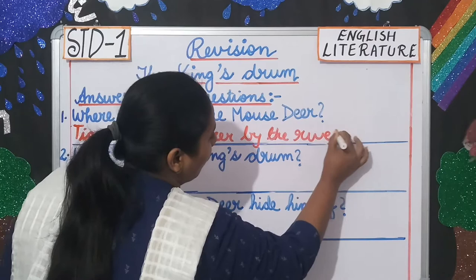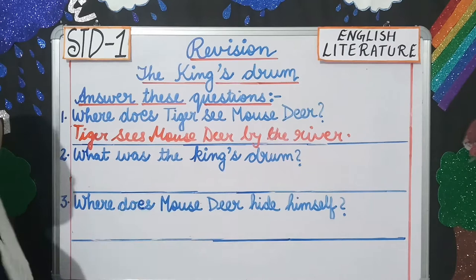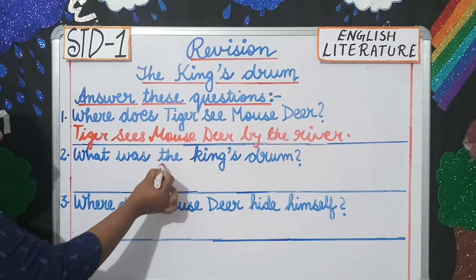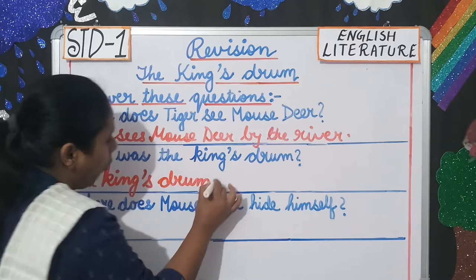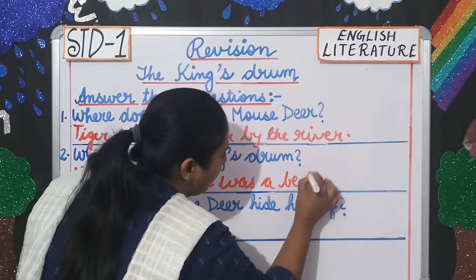Next question: what was the king's drum? It was a beehive. So you will write, 'The king's drum was a beehive.' Note that beehive is a single word, so you will write it together.